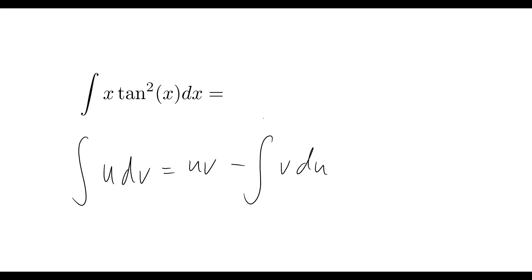Okay, so we'll use our LIATE principle, so that's L-I-A-T-E to select our u. So that stands for logarithms, inverse functions, algebraic, trigonometric, and exponentials. So that's going to let us pick our u. The first one of these that we see in our problem here is the A. So we see an algebraic function in here, and that is just the polynomial of x. So what we'll do here is we'll just say that u is equal to x.